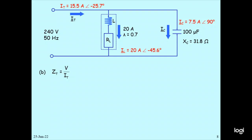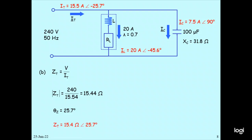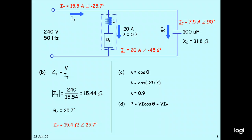You already know the total current IT is 35.5 amperes at minus 25.7 degrees, IC is 7.5 amperes at 90 degrees, and IL is 20 amperes at minus 45.7 degrees. We calculate Z: 240 divided by IT gives MBT equals 55.4 ohms, and the angle of Z is 25.7 degrees. So Z equals 75.5 ohms at 25.7 degrees. The power factor lambda equals cos(25.7 degrees) equals 0.9. The power P equals V times I times PF: 240 times 35.5 times 0.9 gives P approximately 8.6 kW.